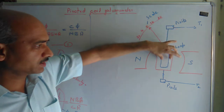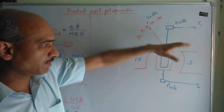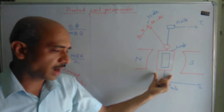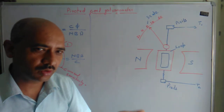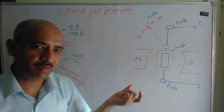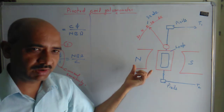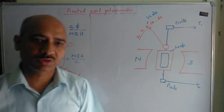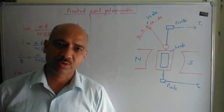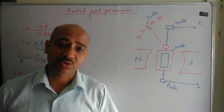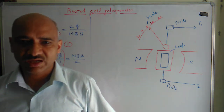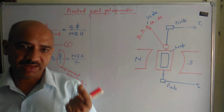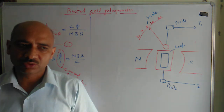When the coil rotates, a deflecting torque acts on it. After the deflecting torque acts, the coil rotates, and a twisted couple is created which is equal to the torsion couple. Equating both, we get the value of the current. This is the galvanometer we use in laboratories for experiments. This galvanometer is very sensitive and delicate — if a very high current flows through it, it gets damaged.